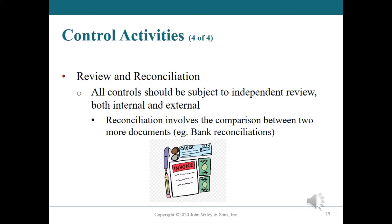Review and reconciliation. The four control activities — assignment of responsibility, segregation of duties, documentation, and physical controls — should be subject to review. This is most effective when performed by someone not involved in the control activity being reviewed: an independent review conducted by another employee, an internal reviewer, or someone outside the company (external review). Reconciliations involve comparisons between two or more documents, like comparing receiving reports with sales invoices. Later in this chapter we will learn about bank reconciliation, a key internal control related to cash.